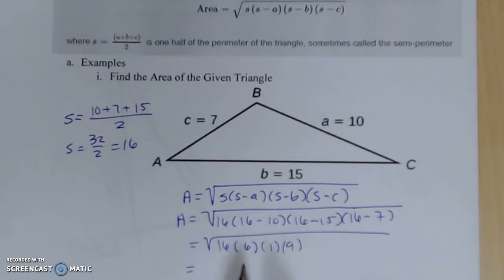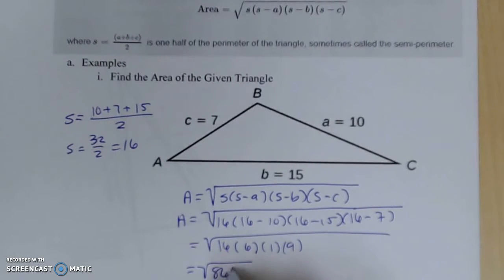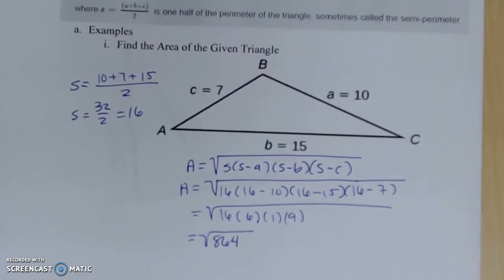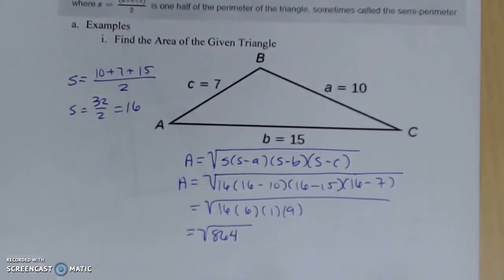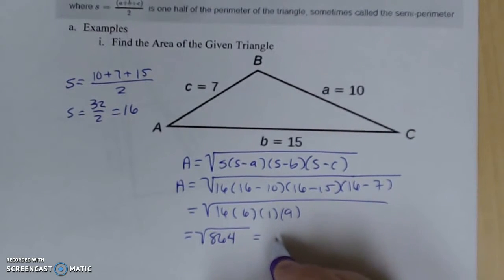It's just a matter of arithmetic now. Multiply all four numbers together, which gives you 864. I would definitely work through this on your calculator to make sure we're getting the same numbers. Square root 864 gives 29.394.